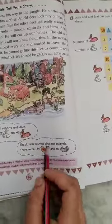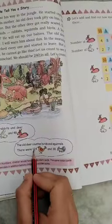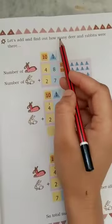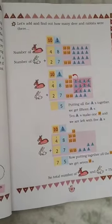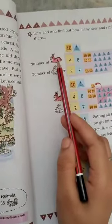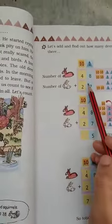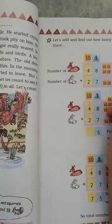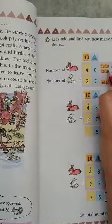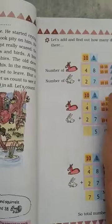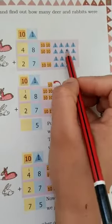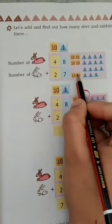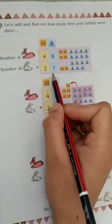The old deer counted birds, the squirrel counted squirrels. Let us add and find out how many deer and rabbits were there. Deer was 48 and rabbit was 27. It broke into 40 tens and 8. 27 broke into 20 tens and 7 made blue triangles.